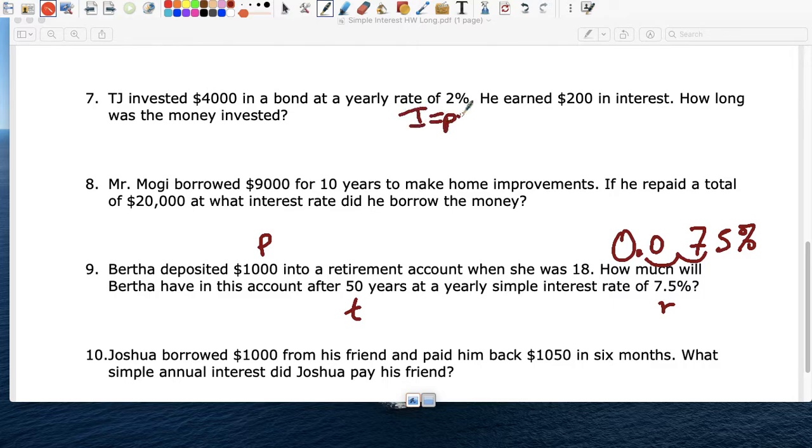So I equals PRT. So imagine, you put $1,000 at an interest rate of 0.075 for 50 years. How much money? So 1,000 times 0.075 times 50. You're going to make $3,750 interest. After 50 years. Not bad.